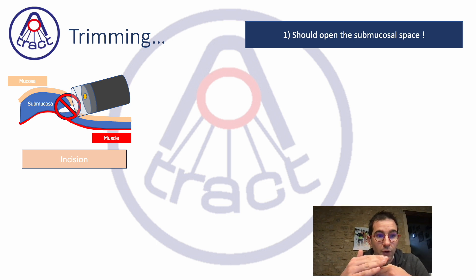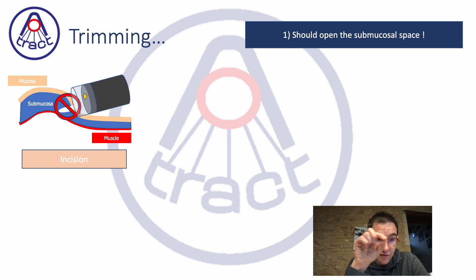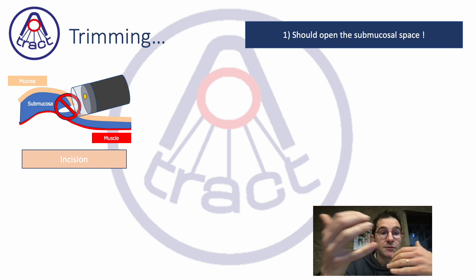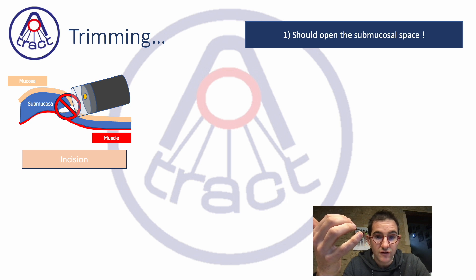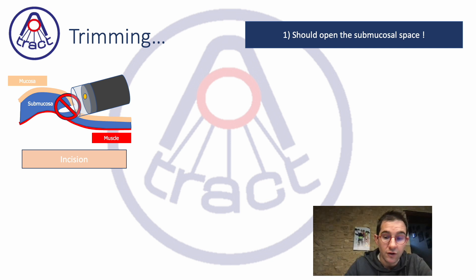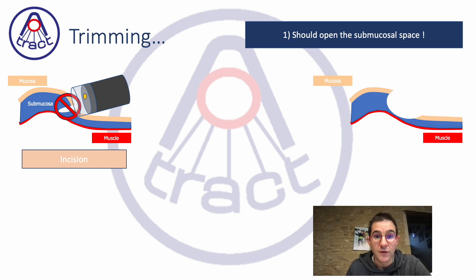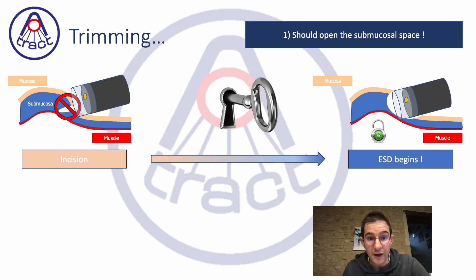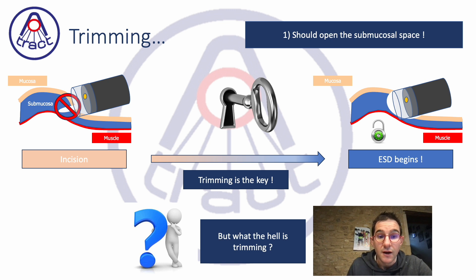The incision is too small. It is impossible with a 0.4mm knife needle to create a space of 9.8 millimeters, for example, for an upper GI scope. There is a discordance between the size of your incision made with a very small needle knife compared to what you need to enter a scope into the submucosa. This difference, which allows you to enter the space, is the trimming.